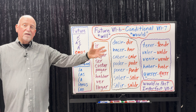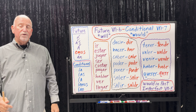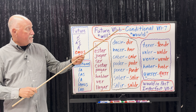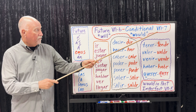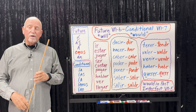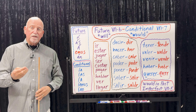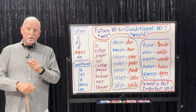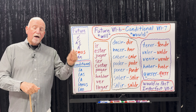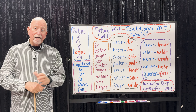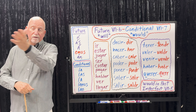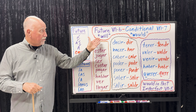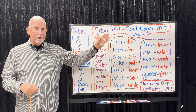Here we are — we've finally got to the future and the conditional. They are verb number six and verb number seven. Remember, there are ten things you can do to a verb in Spanish; our verb numbers go from zero through nine. Eight and nine are the subjunctives — we'll get those later. But right now we're going to get through the future and the conditional.